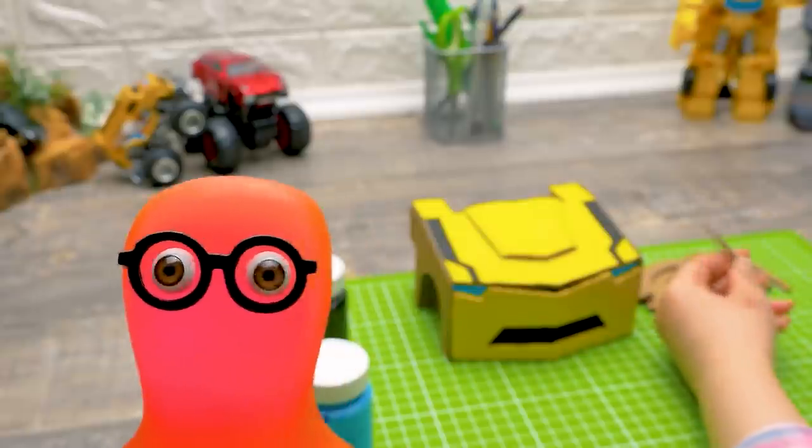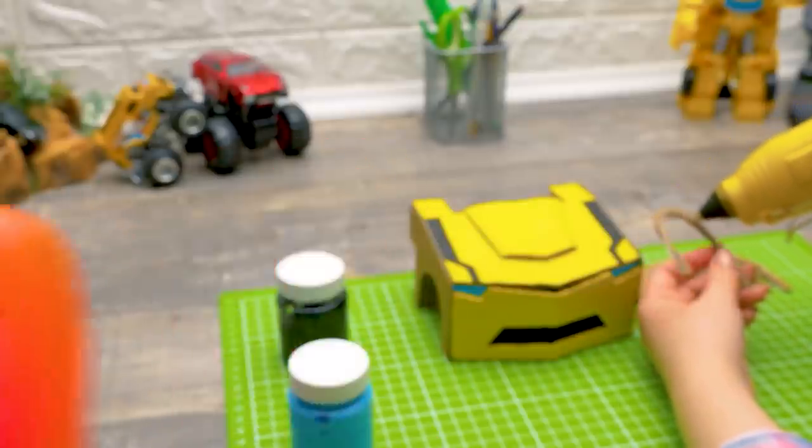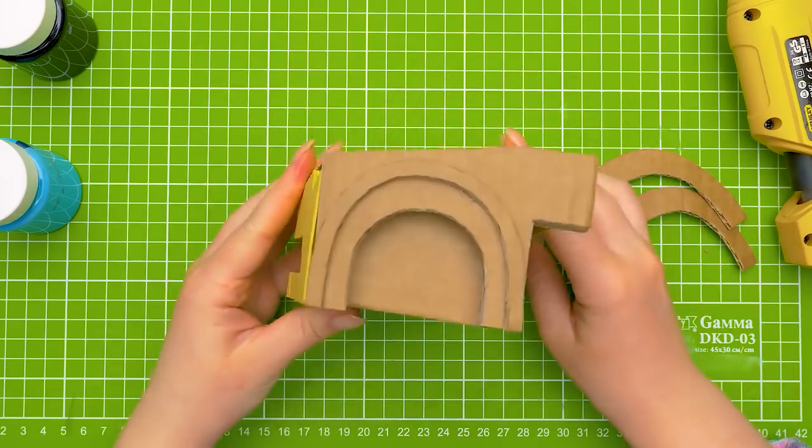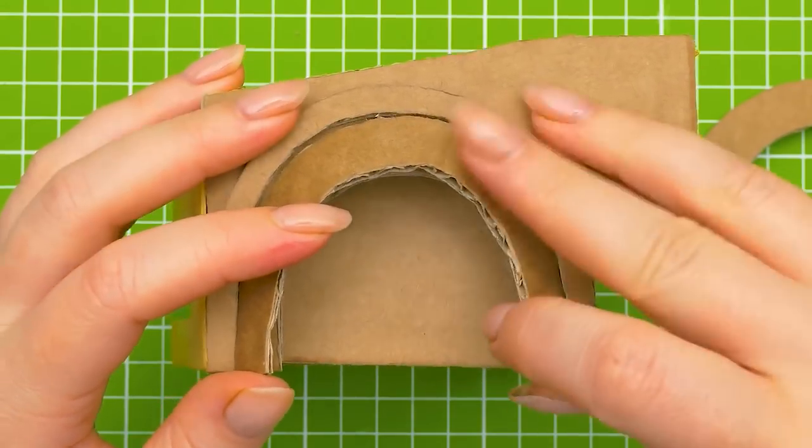Now it's time to glue this overlay. Guys, do you know what car model our lovely bumblebee is? Write in the comments! These will serve as side arches for the wheels. That way, our transformer will be even prettier!